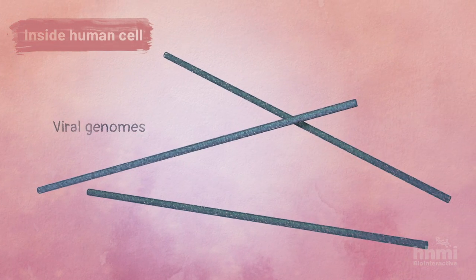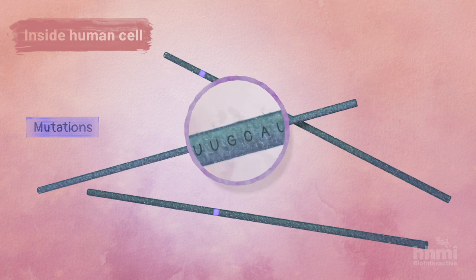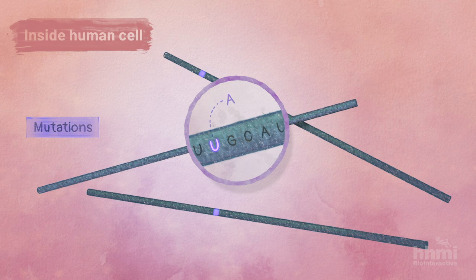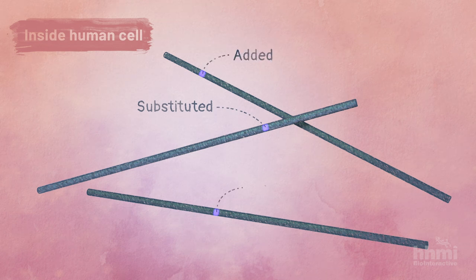This genome replication process is prone to errors. These errors are called mutations. Mutations can occur at random anywhere in the genome. For example, in this mutation, a U was substituted with an A. A nucleotide can be substituted with a different nucleotide, added in the wrong place, or left out.